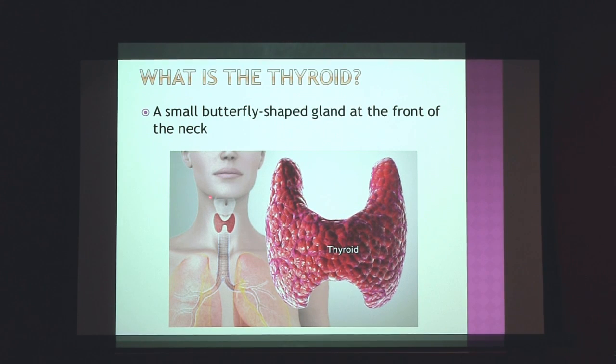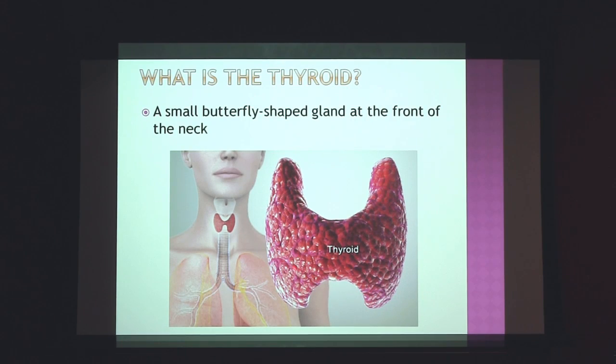Let's broadly start with what is the thyroid gland. The thyroid gland is this butterfly-shaped gland right in the front of the neck. In men, it's usually right below the Adam's apple, so it's fairly easy to find in folks with a prominent Adam's apple. It's made up of the right side lobe, a little bridge in the middle called the isthmus, and then the left-sided lobe. It should be a symmetrical-looking gland and fairly small — we say it weighs about 15 to 20 grams.